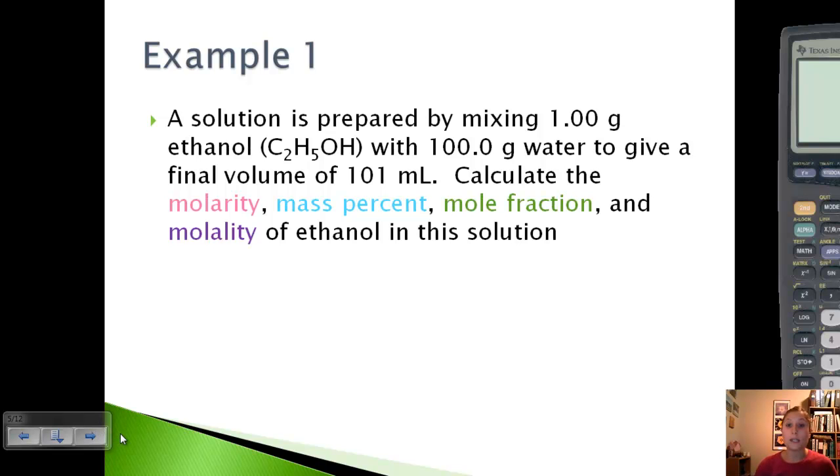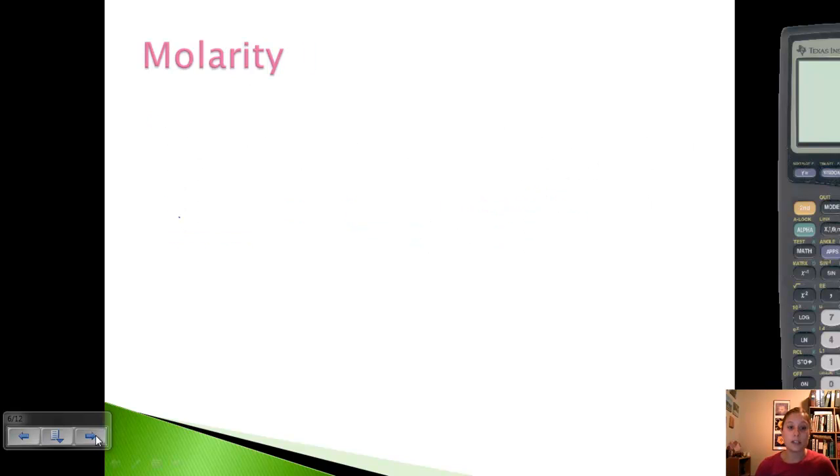We're going to talk about these four main types using an example. We have a solution of ethanol, 1 gram, prepared by mixing with 100 grams of water with a final volume of 101 milliliters. We want to calculate molarity, mass percent, mole fraction, and molality in this solution. Let's look at molarity first.